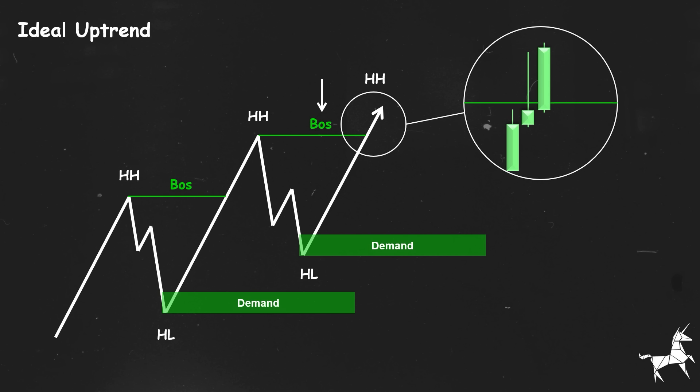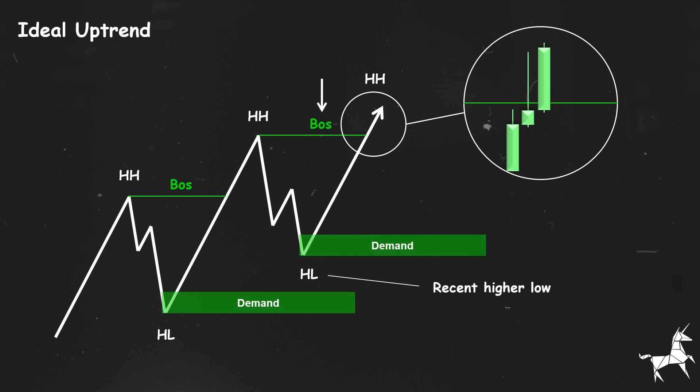At this point, we can identify this level as our recent higher low. As long as the price stays above this level, we remain bullish and focus on buying positions. However, if you spot a strong reversal pattern, you could consider entering a short position, targeting this demand area, as it still acts as strong support for the price.